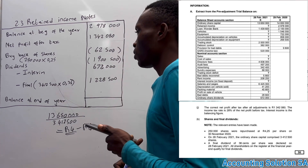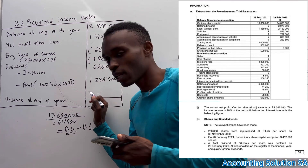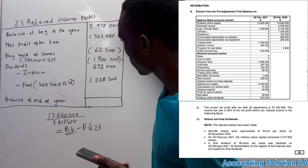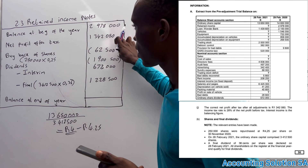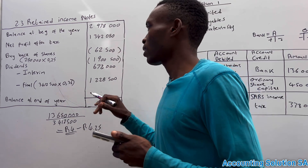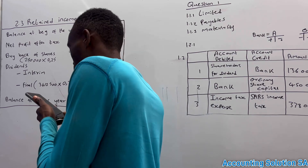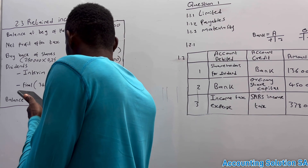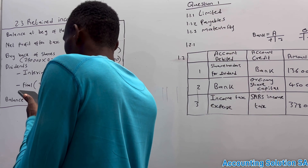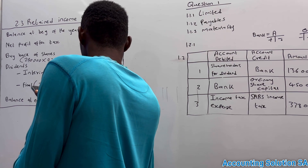Now we can calculate the closing balance. Take the opening balance, add net profit after tax, subtract the share buyback loss, and subtract total dividends. This gives a closing retained income balance of R2 million 357 thousand and 80 rand. That's how you calculate the retained income note.